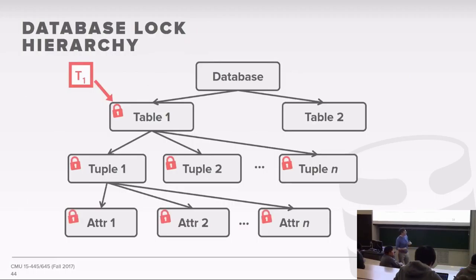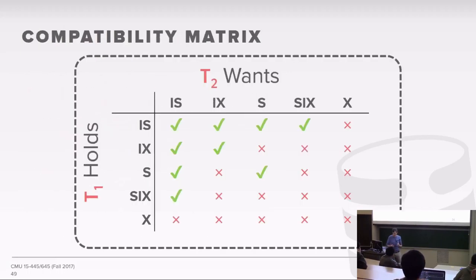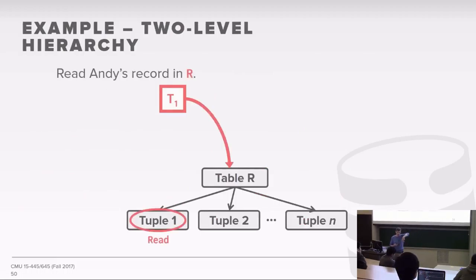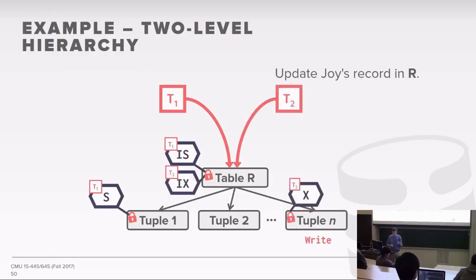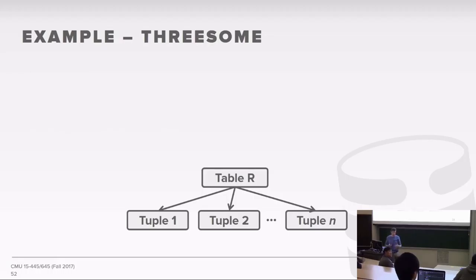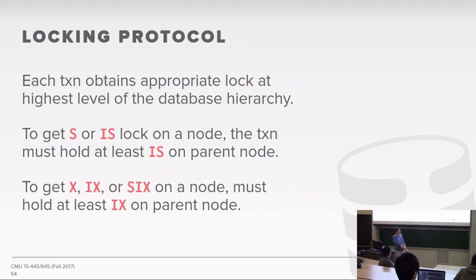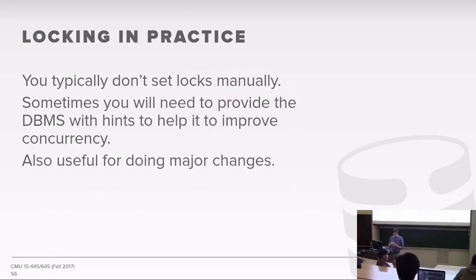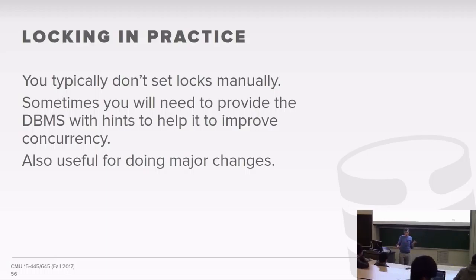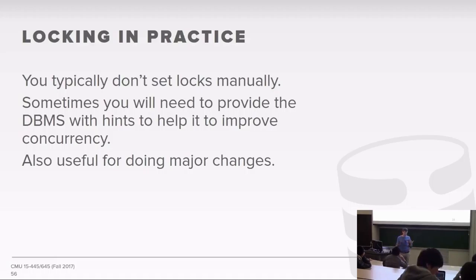Student question: if your lock hierarchy includes the database at the top, do you have to acquire a lock for it? Yes—the multi-granularity hierarchy requires you to acquire locks at every level on the way down. The reason we always go top-down is because of deadlocks. If one transaction goes top-down and another goes bottom-up, they might wait for each other's locks. By enforcing that top-down direction—similar to deadlock prevention with wait-die or wound-wait—we ensure there can be no deadlocks.